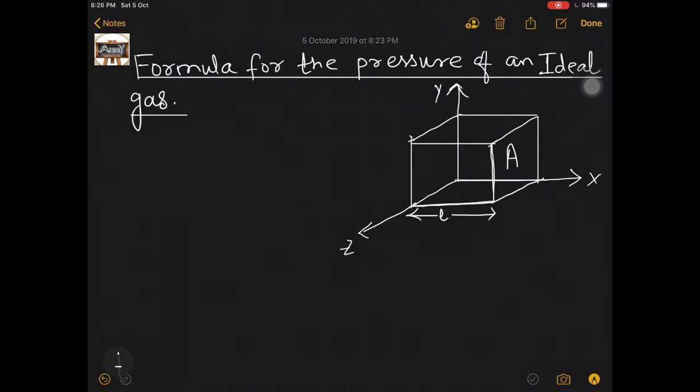I have marked one face of this vessel as A, only to calculate how much pressure the gases present in this vessel are exerting on this wall A. This is one of the molecules of the gas. It is heading towards the wall A with some velocity, say V.